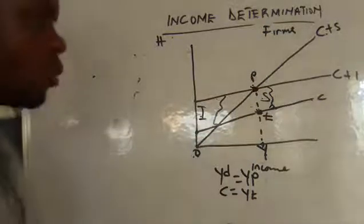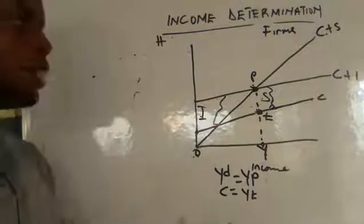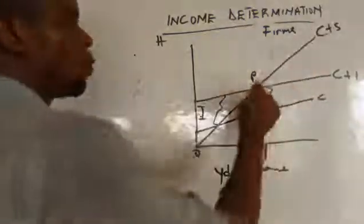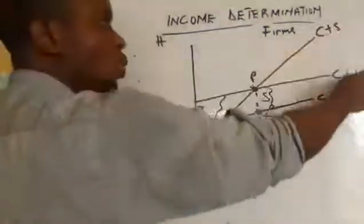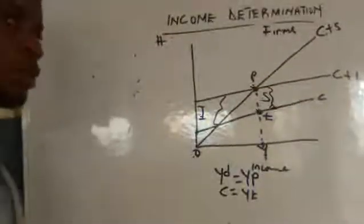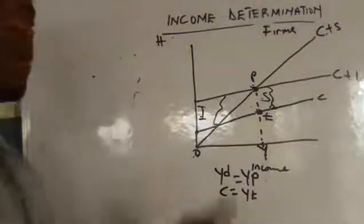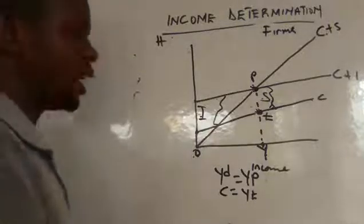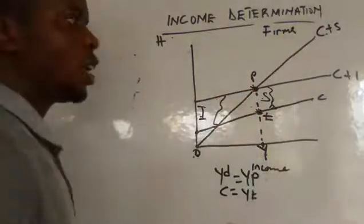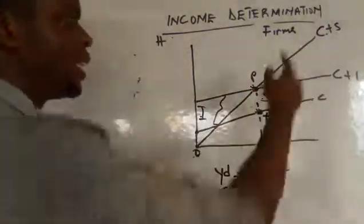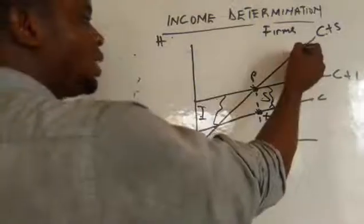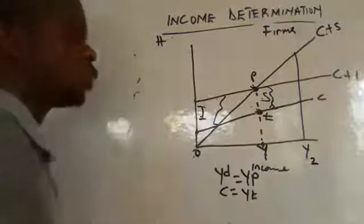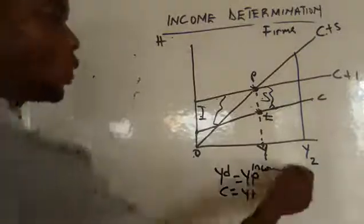This is the equilibrium point where demand equals supply — the money saved equals the money invested by firms. Now, to proceed: when we have this equilibrium, there could be a situation where supply is greater than demand. In that case we move to a second level Y2.